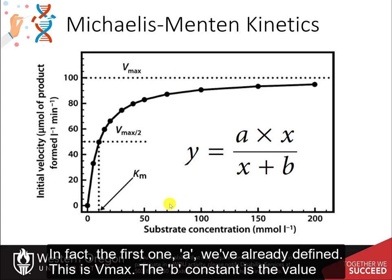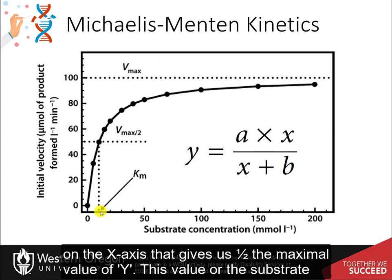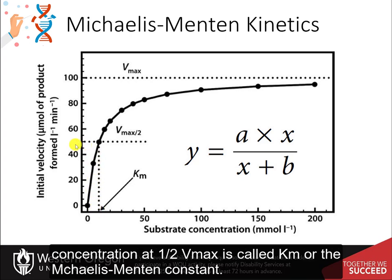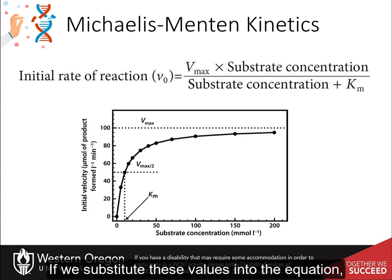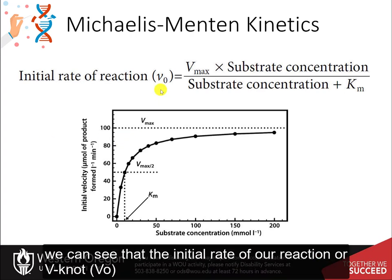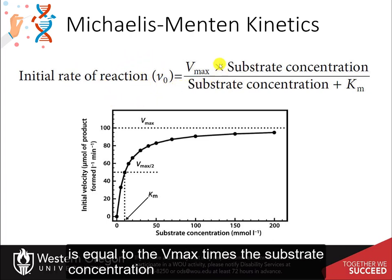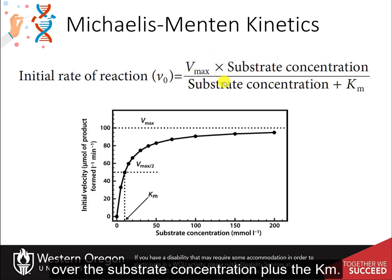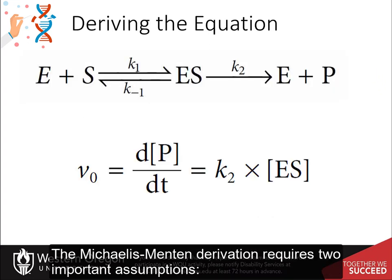The first constant, a, we've already defined — this is Vmax. The b constant is the value on the x-axis that gives us one-half the maximal value of y. This value, or the substrate concentration at one-half Vmax, is called Km, or the Michaelis-Menten constant. If we substitute these values into the equation, we can see that the initial rate of our reaction, or V0, is equal to Vmax times the substrate concentration over the substrate concentration plus Km.